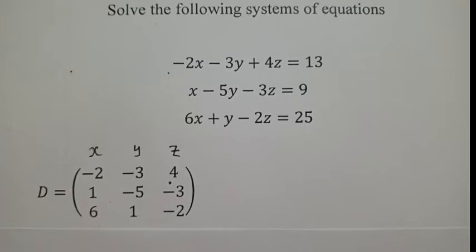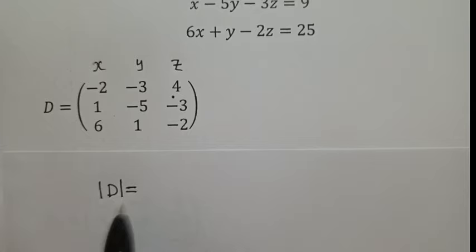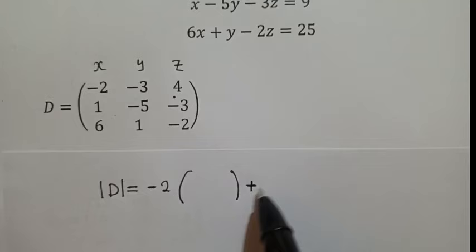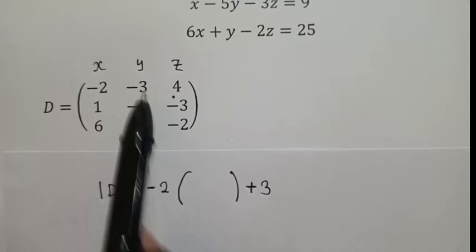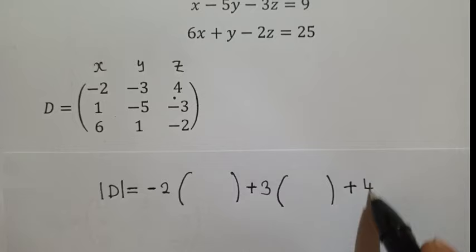To find the determinant of this 3 by 3 matrix, we write D is equal to. You get the first entry, which is negative 2, and open a bracket. Then you get the next entry, negative 3, but change the sign to positive — this is a rule, whichever number is at Y, the sign must change. Then plus the last number, 4, and open a bracket.